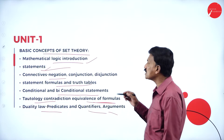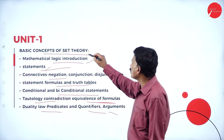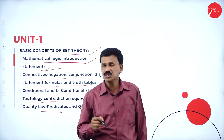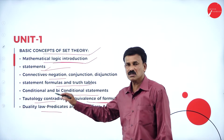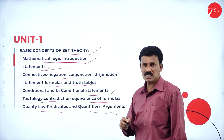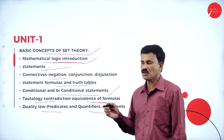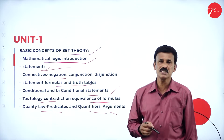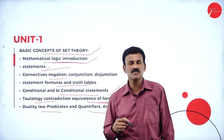The last concept is duality law — predicates, quantifiers, and arguments. This entire chapter depends upon the truth values for the connectives: conjunction, disjunction, conditional, biconditional, and negation. You are also going to study the converse, inverse, and contrapositive.